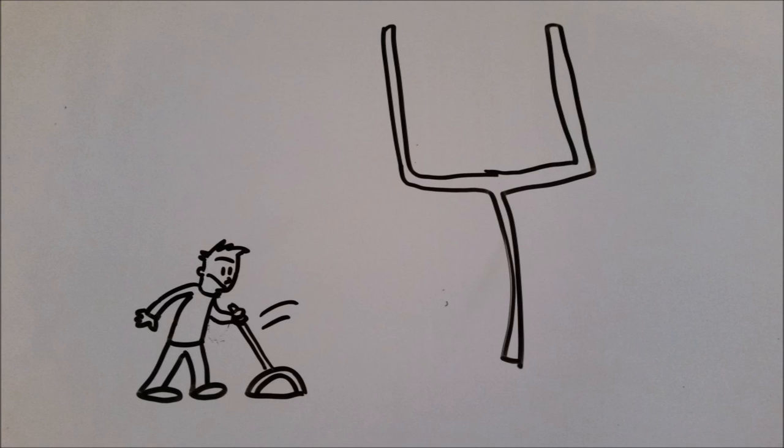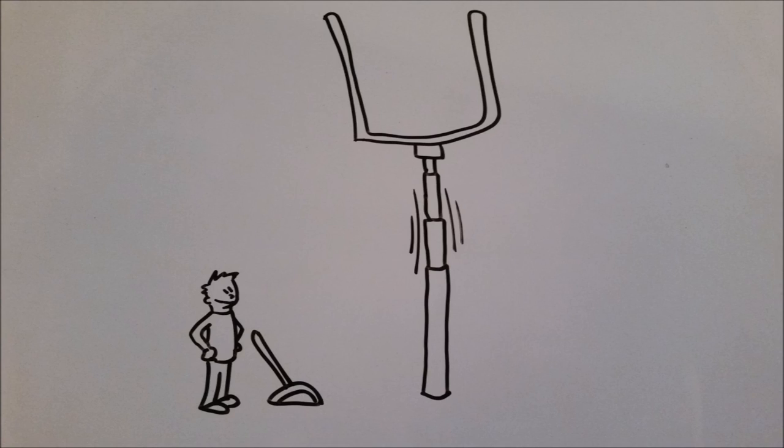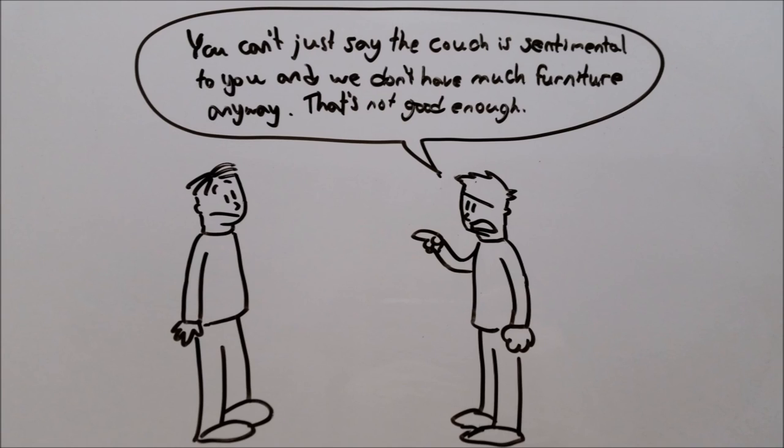If you commit this fallacy, you're disregarding an argument because it's not good enough, and greater evidence should be provided. If Alan says, you can't just say the couch is sentimental to you and we don't have much furniture anyway, that's not good enough. He's refusing to accept any arguments Bernard may have because in his mind, they're not up to his standards.